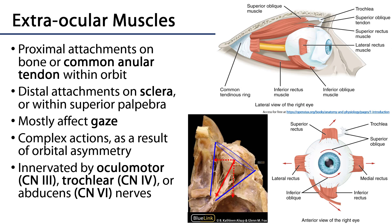The extraocular muscles are sometimes referred to as extrinsic eye muscles. These are muscles found outside of the eye which largely affect either the movement of the eye or the superior eyelid.